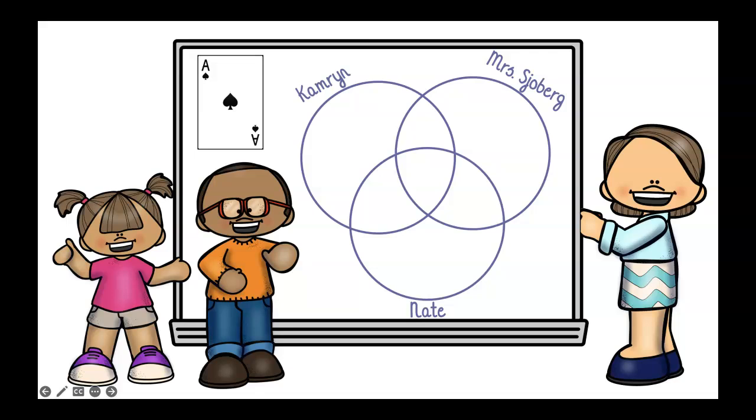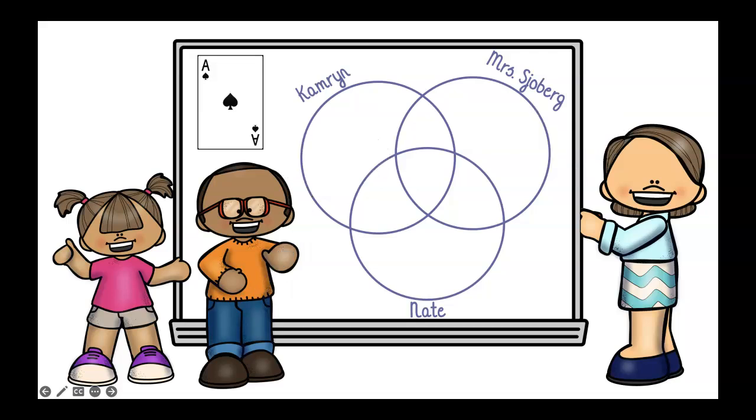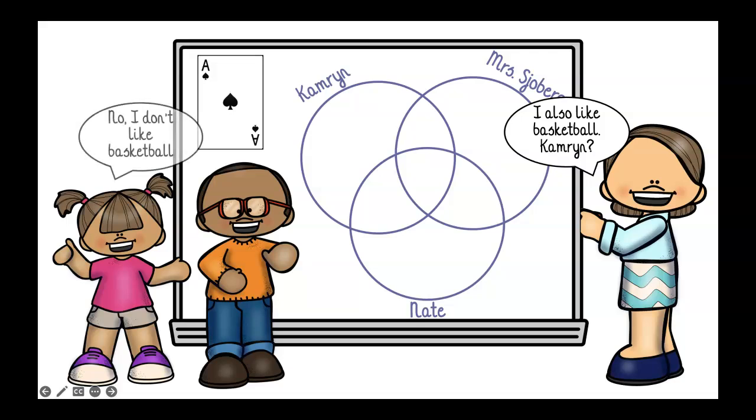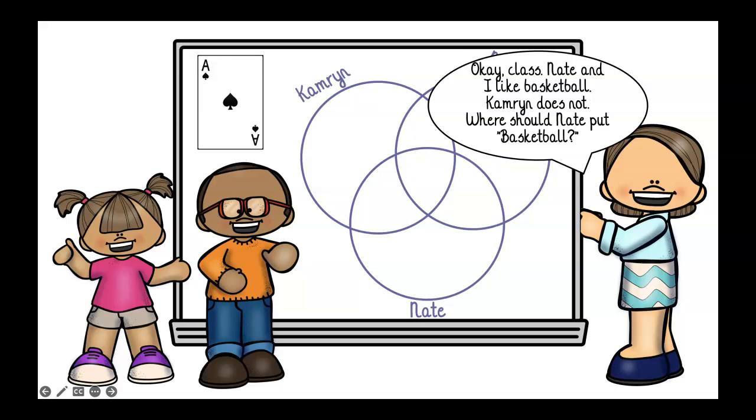All right. We're going to go ahead and populate this Venn diagram. So, Nate, what's one of your interests? I like basketball. Hey, guess what? I also like basketball. How about you, Cameron? No, I don't like basketball. All right, class. So, Nate and I like basketball, but Cameron does not. So, where should Nate put basketball?